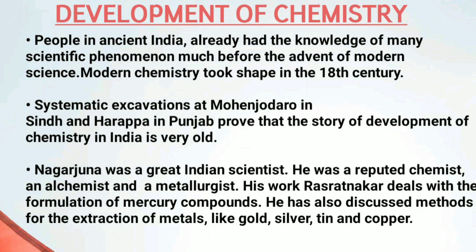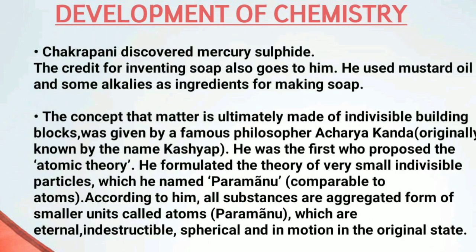Nagarjuna is considered a great Indian scientist. In his book Ras Ratnakar, he discussed the formation of mercury compounds. He also discussed in his book the extraction of metals such as gold, silver, tin, and copper. Chakrapani discovered the chemical compound mercury sulfide, and the credit for first inventing soap also goes to him — he invented soap with the help of mustard oil and certain alkalis. Acharya Kanad, also known as Kashyap, was the first to tell us about matter. He explained that matter is made up of individual particles, and he named these indivisible particles 'Parmanu', which we today call atoms.